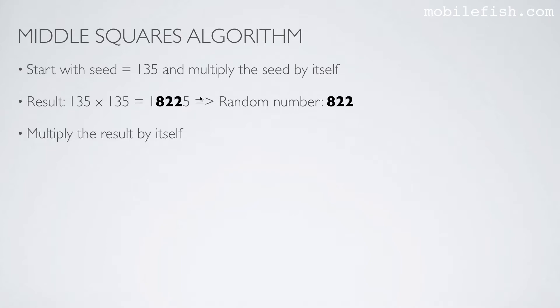Next, you take this result and multiply by itself. So here's the result. You multiply by itself. This is the result. Again, you take the middle part and you place it behind the previous random number.